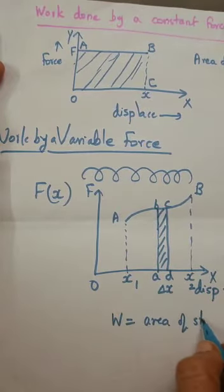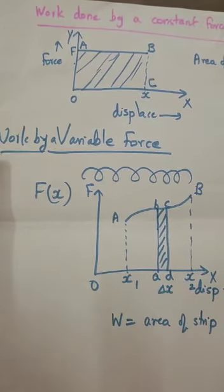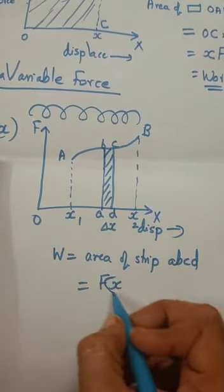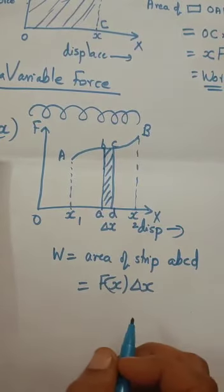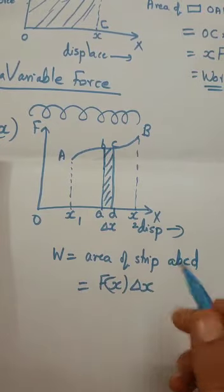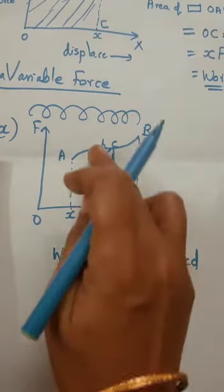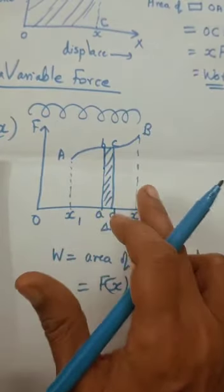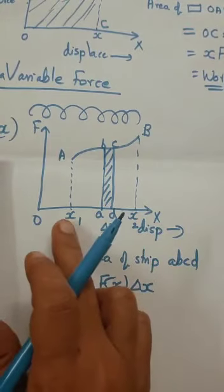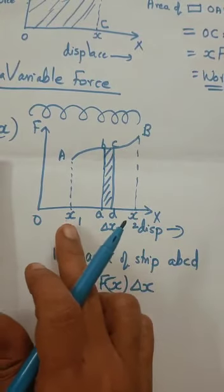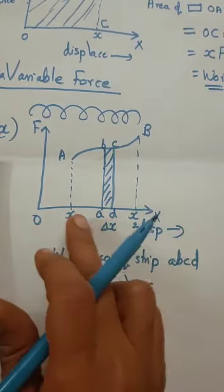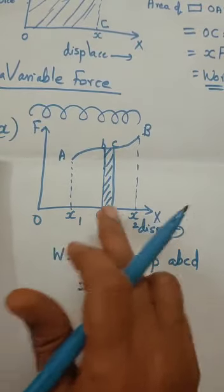The work done for this small displacement delta x — that is, the work done in moving the body by delta x — is the area of strip ABCD. The area of strip ABCD equals f(x)·Δx. The total work done is the sum of all such terms, corresponding to the intervals between x1 and x2.